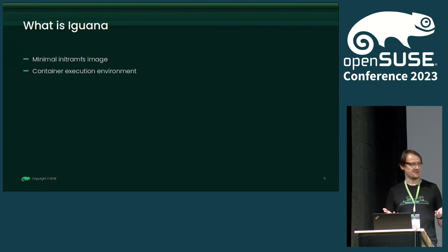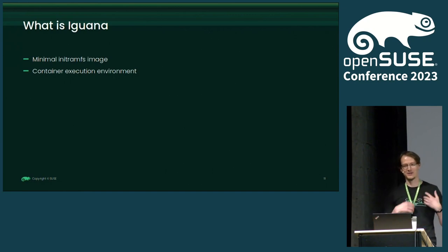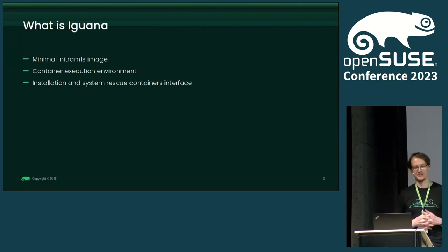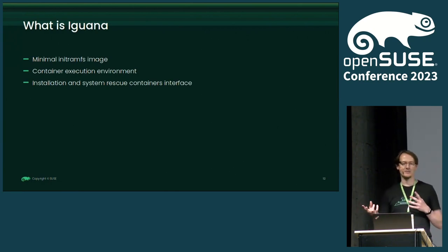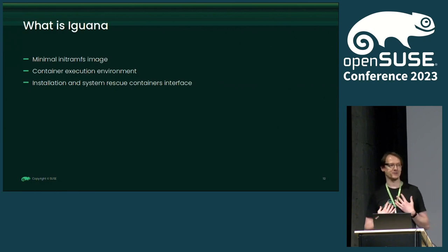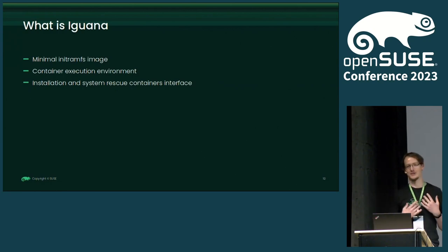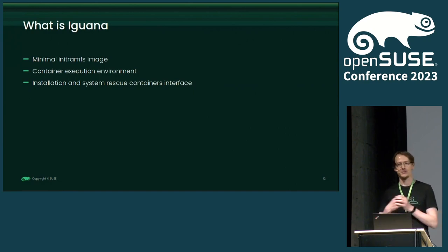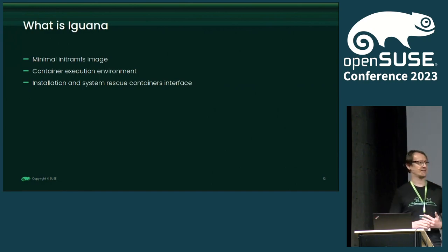With Iguana, I am configuring this runtime in such a way so I can do this. And the last part of what Iguana is, is also some kind of contract or protocol or interface between the container and the initrd — what we expect from it. Because at the end, our result is to have an installed and configured system. The containers need to prepare it somehow, install the system, and prepare it in such a way that Iguana then understands it and can boot and continue booting.